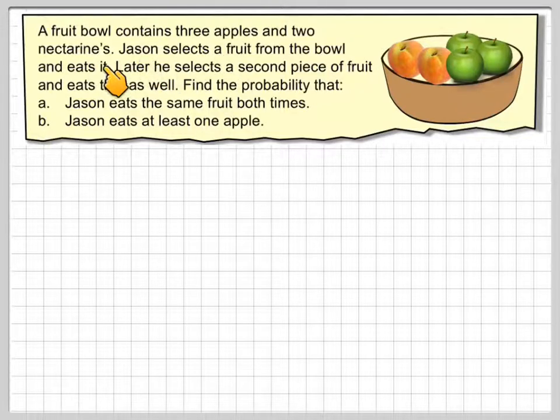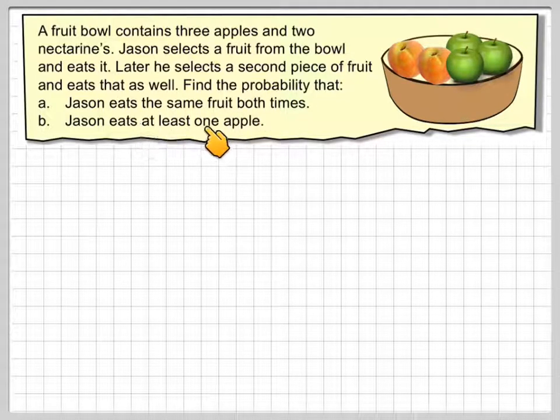A fruit bowl contains three apples and two nectarines. Jason selects a fruit from the bowl and eats it. Later he selects a second piece of fruit and eats that as well. Find the probability that Jason eats the same fruit both times or Jason eats at least one apple.